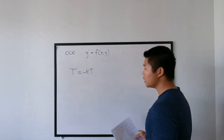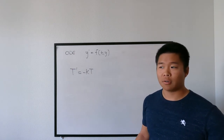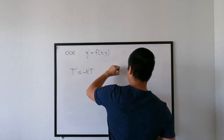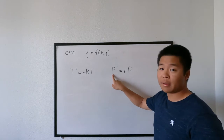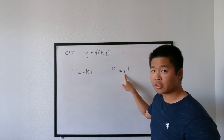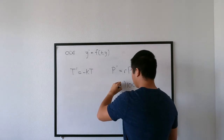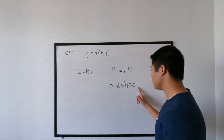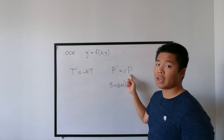Another example is the compound interest equation: the more money you have in your account, the more money you gain from interest. That is defined as P' = RP, where P is the amount of money in your bank account, P' is how much money you're going to make, and R is the interest rate. If you have $100 at 5% interest, you get $5. If you had $1,000, you'd get $50. So the rate of change depends on how much you currently have in the account.